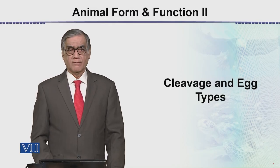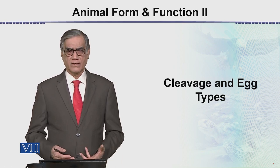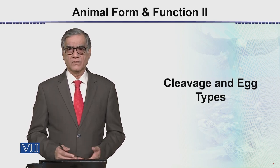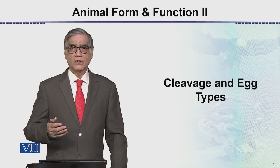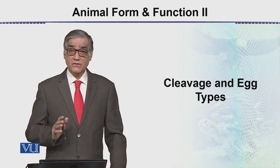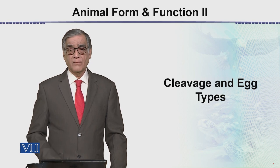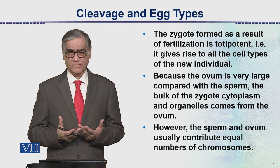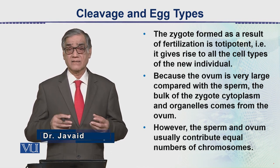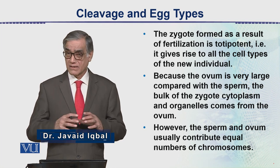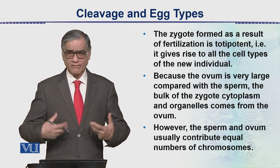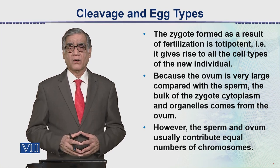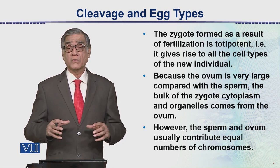Next topic is cleavage and egg types. Cleavage is in fact cell division, and it starts just after the process of fertilization. The zygote that is formed begins to divide within the uterine wall, and this division is called cleavage. The difference between cleavage and normal cell division is that in normal cell division, when a cell divides, its size decreases, then it grows back, then it divides again — this is mitotic division — and all cells formed are of equal size.